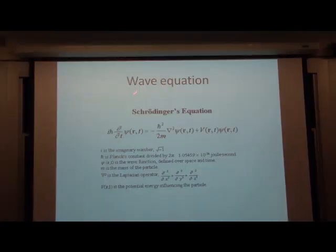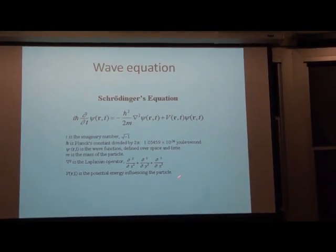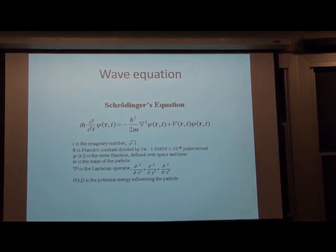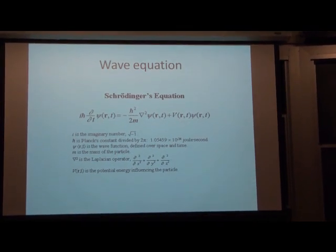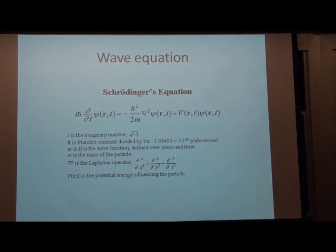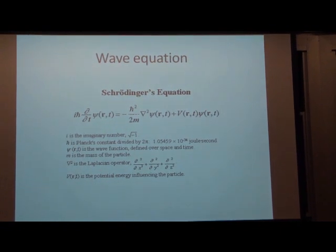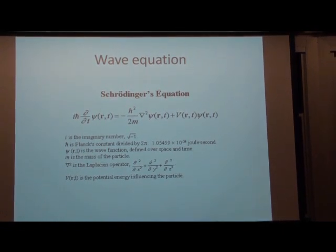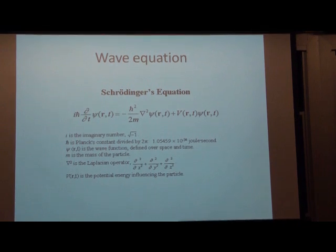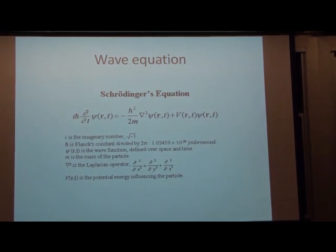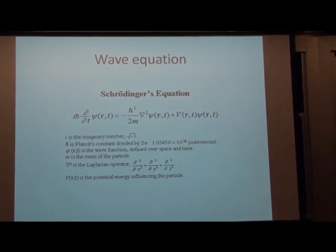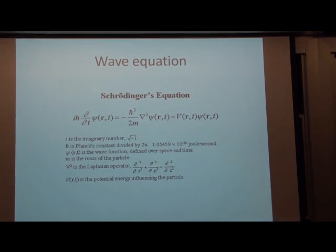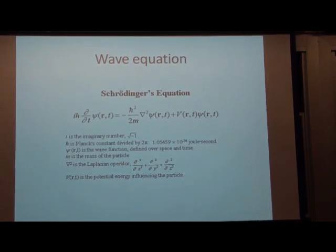Essentially, Schrödinger arrived at his wave equation. It's important to recognize that he did not derive it from fundamentals the way Einstein's equations are derived from fundamentals. He just found the wave equation — he took the well-known wave equation, fitted data to it, and came up with an explanation.